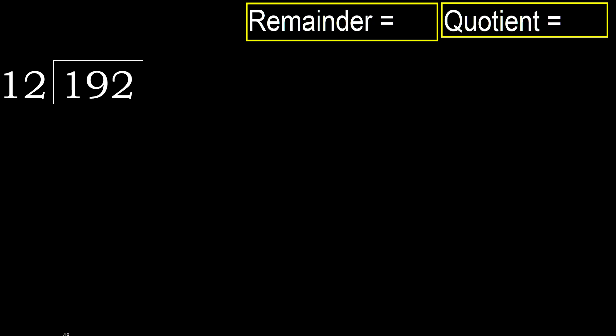192 divided by 12. 1 is less, therefore next. 19 is not less, therefore with 19: 12 multiplied by which number is nearest to 19 but not greater? 12 multiplied by 2 is 24, which is greater.